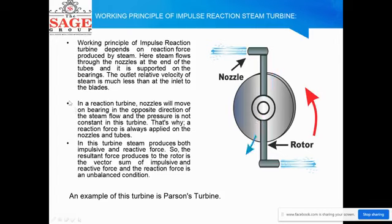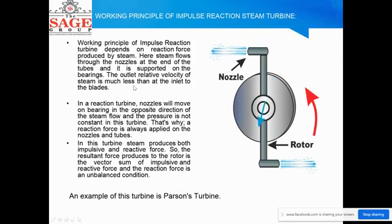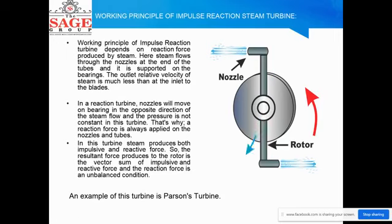Reaction turbine: In a reaction turbine, you can see that steam flows inside the turbine and water jets come out, with blades moving in the opposite direction. The reaction turbine depends on the reaction force of the steam. Steam flows through nozzles at the end of the tube, which is supported on bearings. The outlet relative velocity of the steam is much less than at the inlet of the blade. The nozzle moves on the bearing in the opposite direction of the steam, and since the pressure is not constant across the turbine, the reaction force also varies.